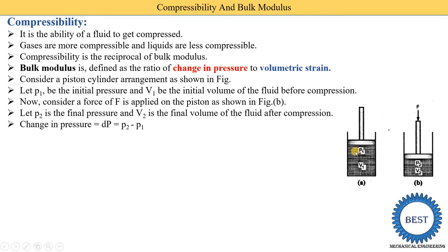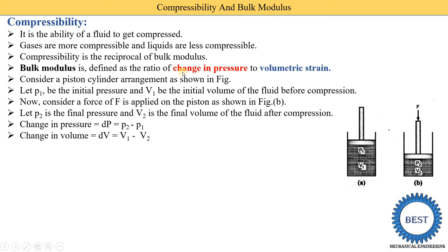So the change in pressure is 10 minus 1, giving an answer of 9 for the change in pressure. The second term is change in volume, denoted as dv, and it equals v1 minus v2. We write v1 minus v2 because v1 is larger and v2 is smaller. For example, if v1 is 5 and v2 is 1 cubic meter, then dv equals 4 cubic meters. In this definition, two terms are used: change in pressure and volumetric strain.